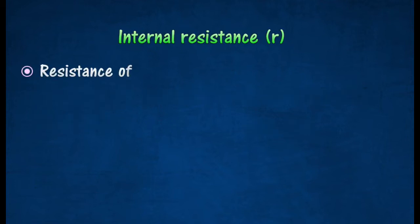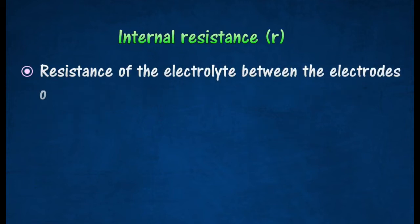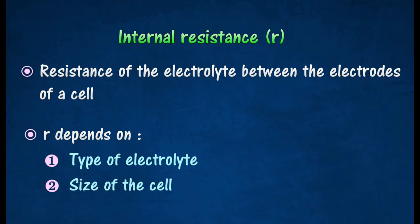Internal resistance is the resistance of the electrolyte between the electrodes of a cell. The internal resistance of a cell depends on the type of electrolyte and the size of the cell.